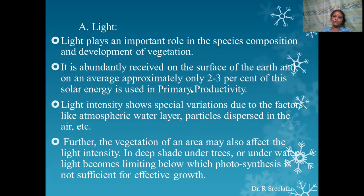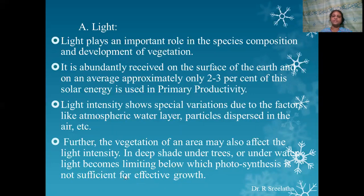Primary productivity refers to the total production by green organisms — those which can trap sunlight or chemical energy and produce organic molecules like carbohydrates. Light intensity shows spatial variations due to various factors like the atmospheric water layer and particles dispersed in the air. Further, the vegetation of an area may also affect the light intensity.